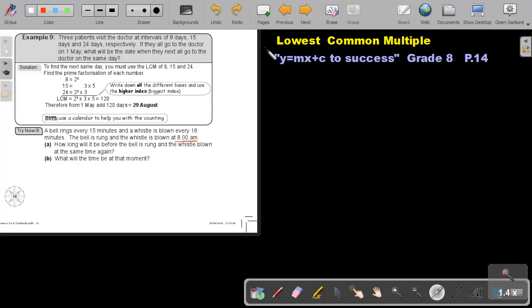Part 11. We are going to continue with the lowest common multiple and look at a few practical examples. You will find this on page 14 in the Namibia Mathematics Grade 8 textbook Y equals MX plus C to success.